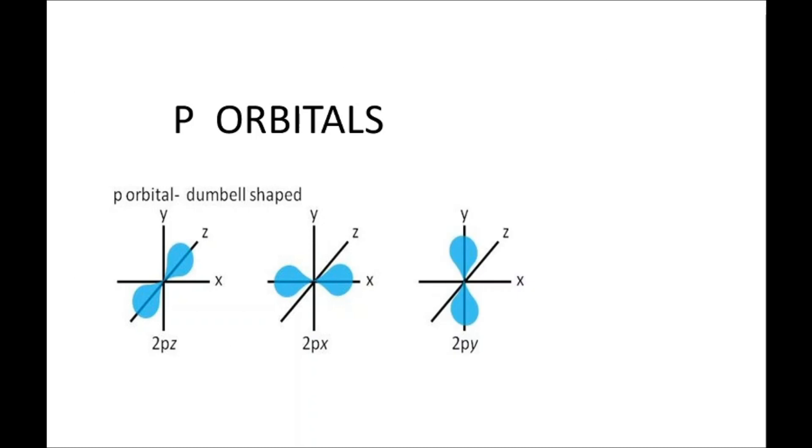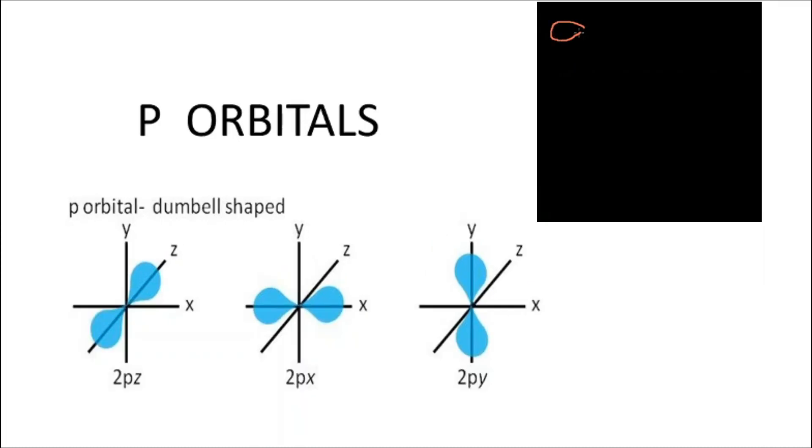What are p orbitals? P orbitals are dumbbell-shaped orbitals, or in short, they have two lobes. The difference between these three orbitals is that they lie on three different axes: X, Y, and Z. P orbitals always lie perpendicular to the axes.